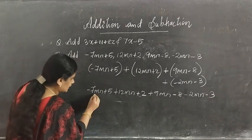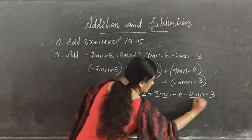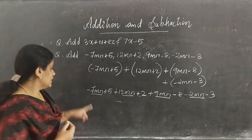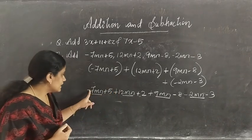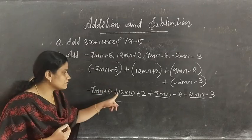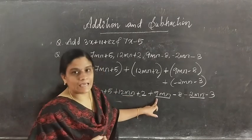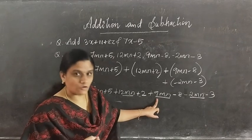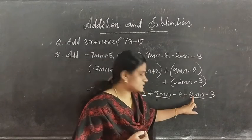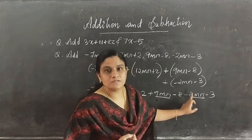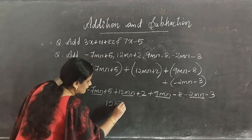Now we see the like terms: mn, mn, mn — these are like terms. So: negative 7 plus 12 is 5; 5 plus 9 is 14; 14 minus 2 is 12. So you have 12mn.